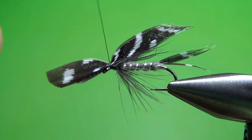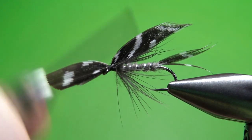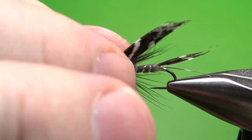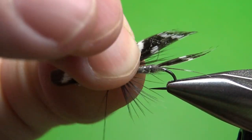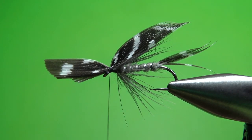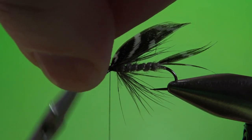So a few locking wraps right here, and it shouldn't go anywhere on you. Well, that's not perfect, but it's good enough for government work. Let's go ahead and snip off the front of this and then build our head.